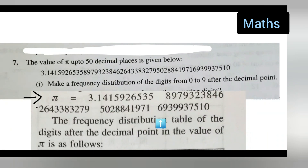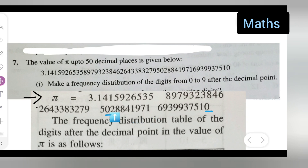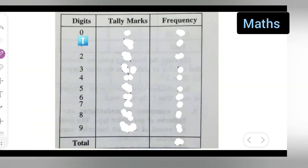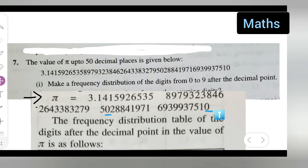First, let's see how many times 0 occurs. You can see the zeros — there are one and two zeros, so write down two. Next, how many times does 1 occur? We need to check.